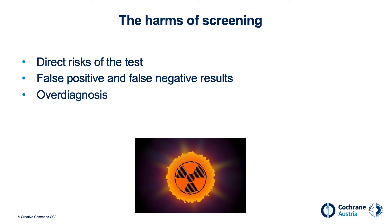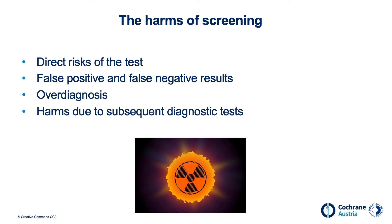Screening detects diseases that the patient would never have noticed otherwise. For example, screening examinations can identify tumors that grow very slowly and would never have caused symptoms. When such tumors are detected, it is called overdiagnosis. If the screening test results are positive, subsequent tests are done to confirm a diagnosis, such as a biopsy in the case of a positive mammography result. These subsequent tests are also associated with the risk of adverse events. Every therapy is associated with possible side effects. If a cancer is diagnosed that would never have caused symptoms, the person is exposed to the risk of side effects without any benefit.